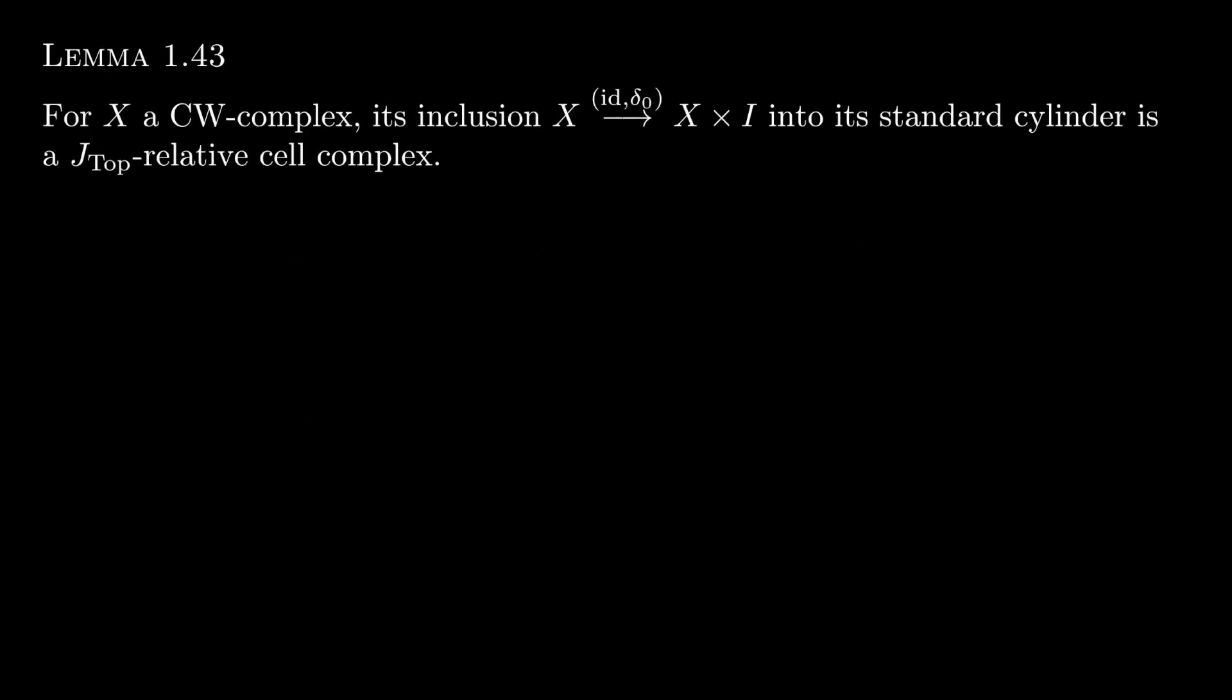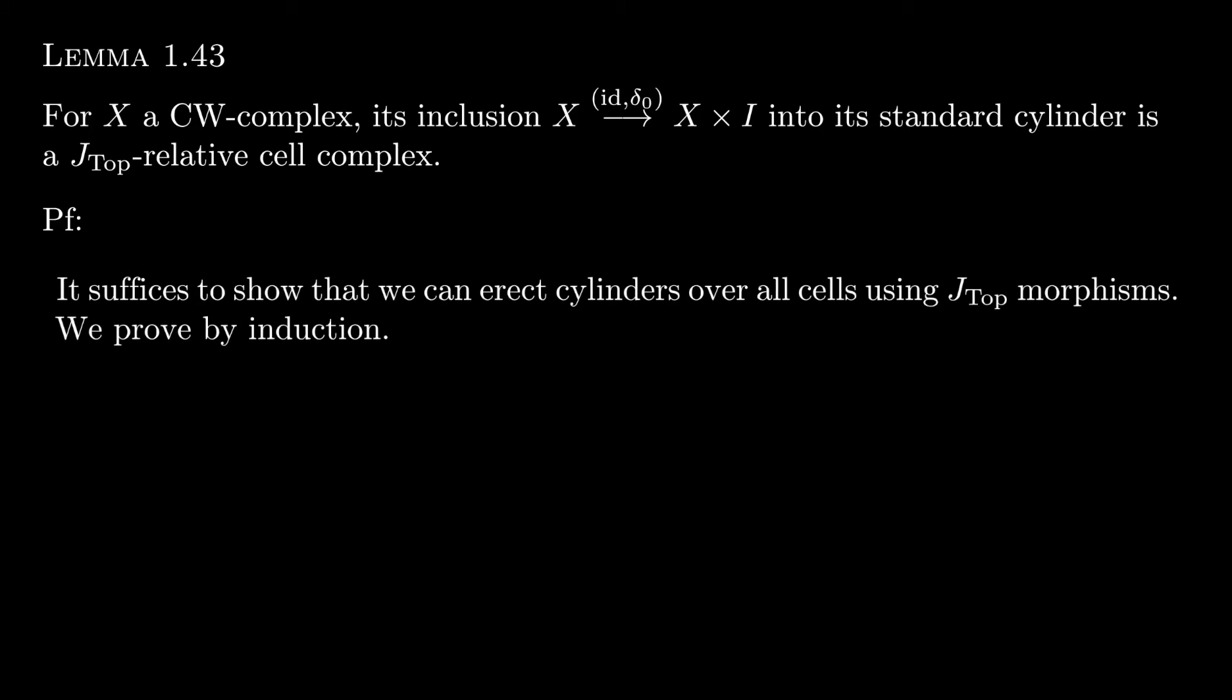So this has immediate applications. For example, the inclusion of a CW complex into its standard cylinder object is a J-TOP relative cell complex. Now you might think that on the surface this is a pretty basic observation because couldn't we just erect cylinders over all of the cells, which are N-discs, and then that would just be a J-TOP relative cell complex. This is the right idea, but it only works so well in the zero-dimensional case.